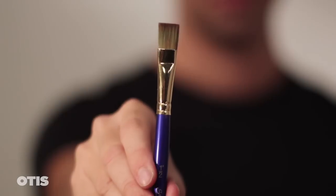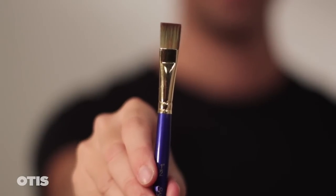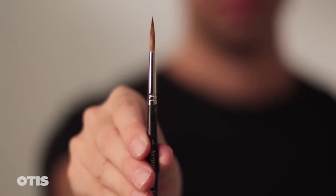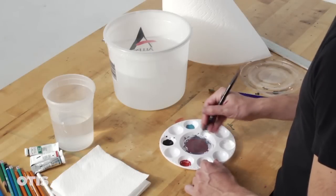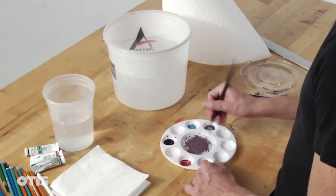We will typically be using two types of brushes, a half inch flat and a number 5 pointed round. The finest points are made from the fur on the tail of a sable, a mink-like animal.